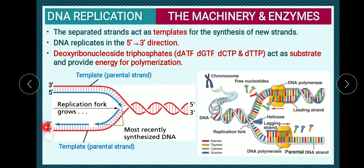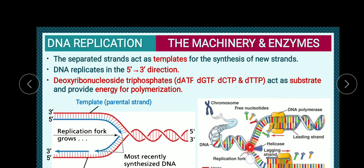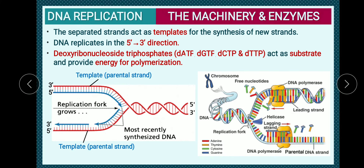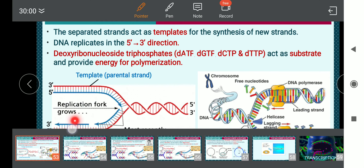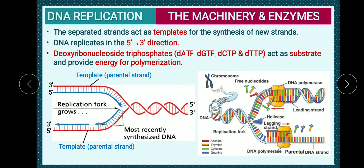On the other strand, where the parental strand runs 5' to 3', the new strand would have to be synthesized in the 3' to 5' direction, which is not possible. So many primers are added on the lagging strand. From the 3' end of one primer, extension occurs up to the 5' end of the next primer — this is the conventional 5' to 3' direction. The strand where discontinuous synthesis occurs — short stretches of DNA synthesized by joining one primer to another — is called the lagging strand.